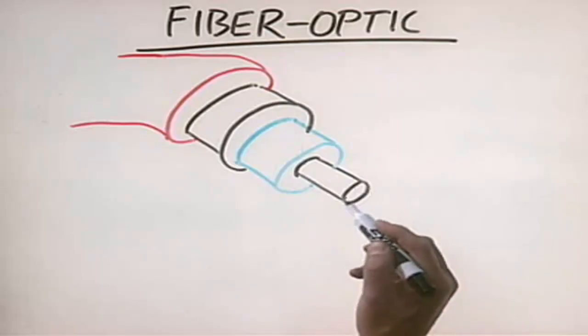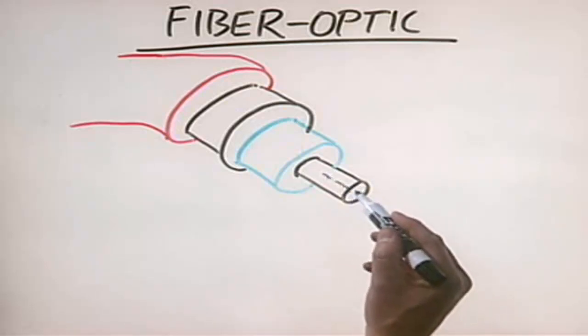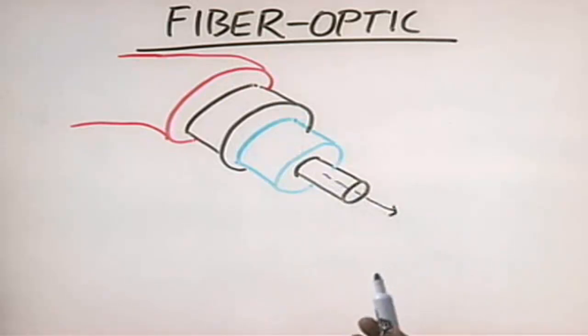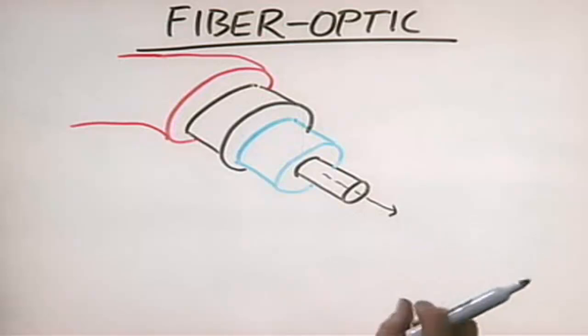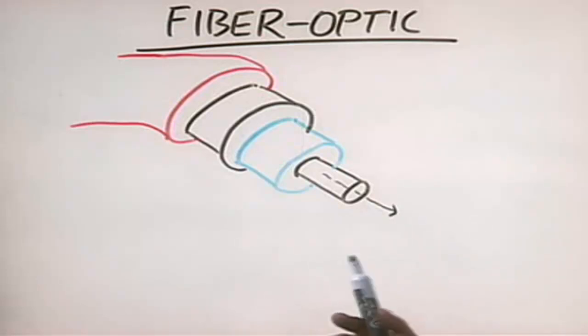In addition to coaxial and twisted pair, there is another type of bounded network media called fiber optic cabling. Fiber optic cabling is very different from coax or twisted pair — it transmits light signals instead of electrical signals. To do that, fiber optic cabling has a clear plastic or glass central core through which light rays are transmitted as pulses representing binary zeros or ones, just like electrical signaling.